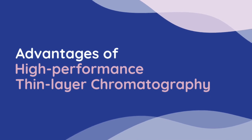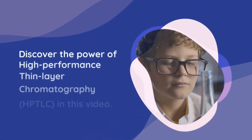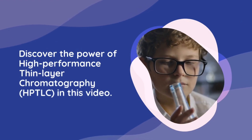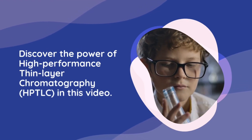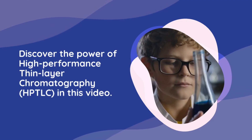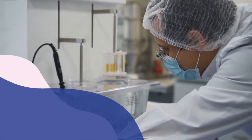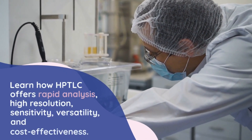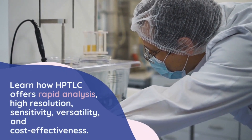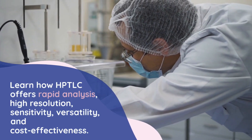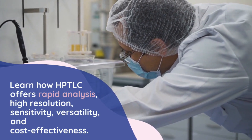5. Detection: After the development process, the separated compounds on the TLC plate need to be visualized and quantified. Detection methods can include UV absorption, fluorescence, derivatization reactions, or the use of specific reagents. The TLC plate is observed under appropriate illumination or exposed to a detecting device to visualize the separated spots or bands.